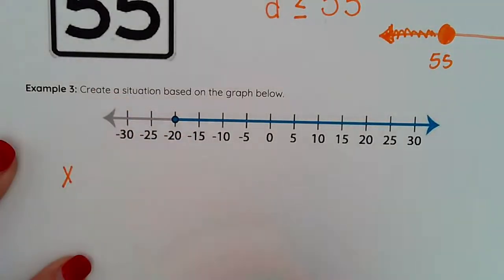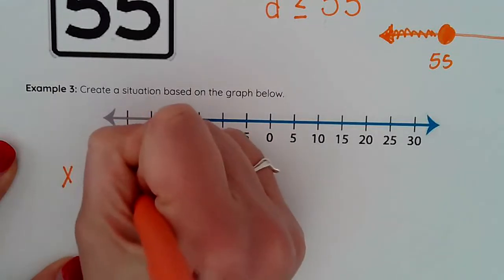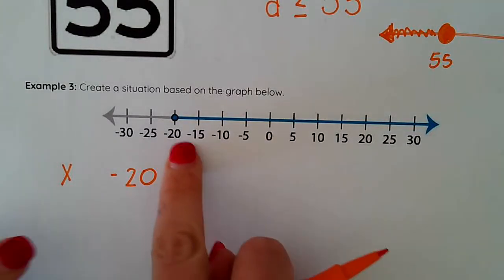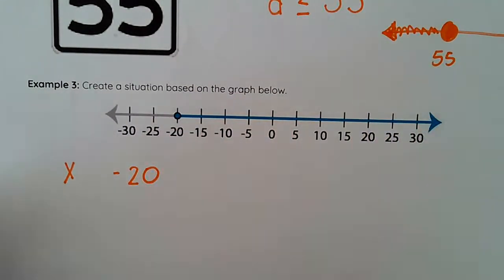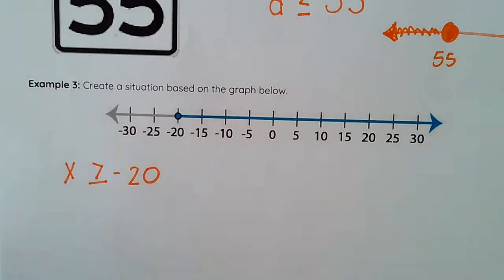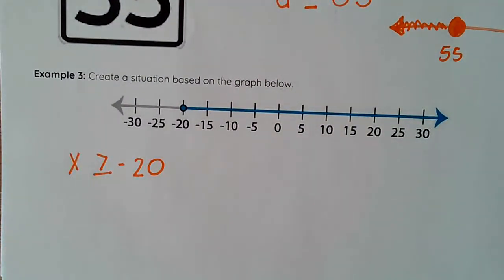So I'm just going to put a variable in and then my start of my solution set is negative 20. So that's my number that I'm starting at and then I see that it's going to the right so that means it's greater and since that circle is colored in it can be equal to. So whatever my situation is is x is greater than or equal to negative 20.